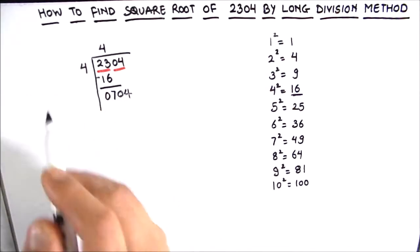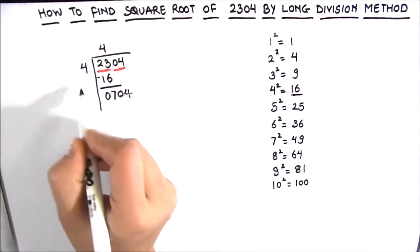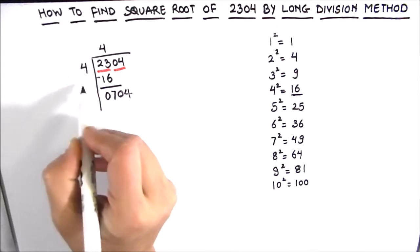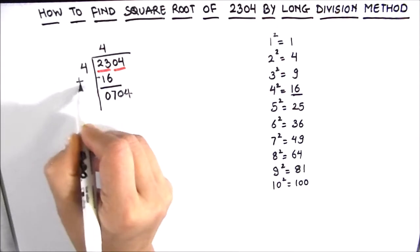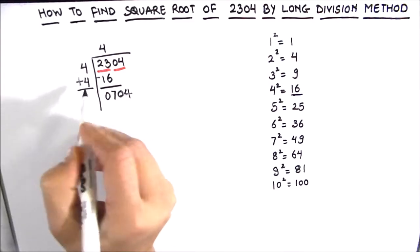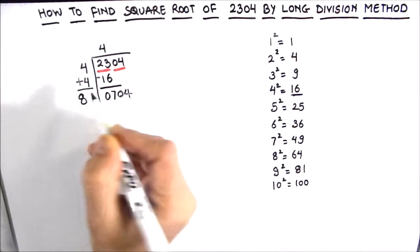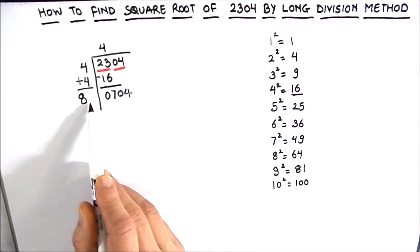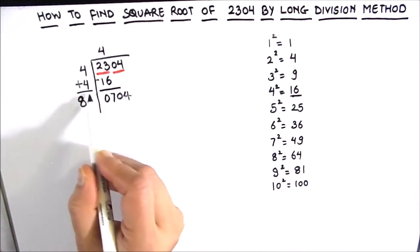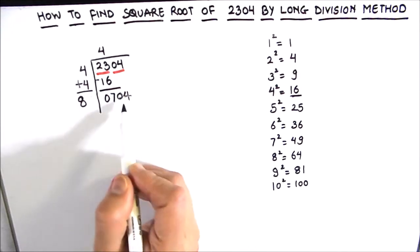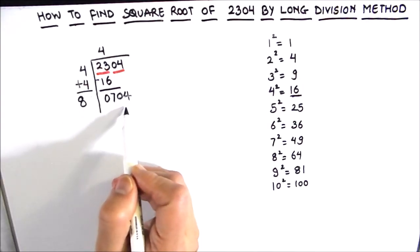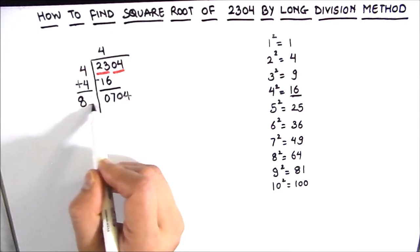For the new divisor we need to add the same number that is the divisor to the divisor, or we can say that we have to take twice the divisor. So we are going to add 4 to it. 4 plus 4 is 8 and there will be some other digit which we are going to annex here. The number to be annexed is decided in such a way whose product with the new divisor gives the number which is equal to 704 or just less than 704. So let us find out the number we need to annex here.